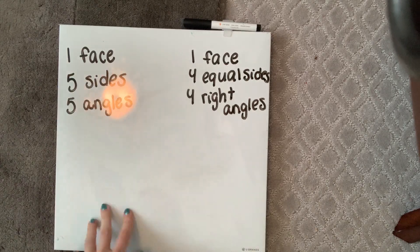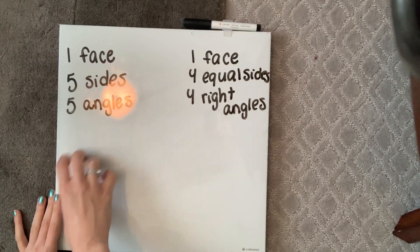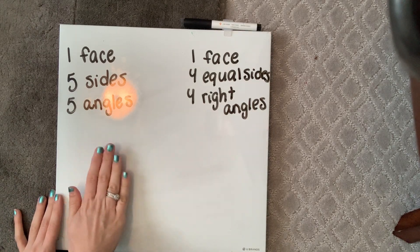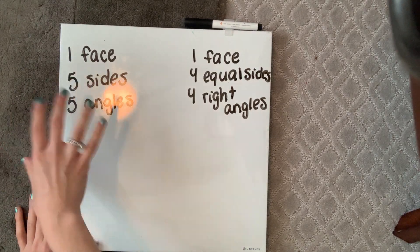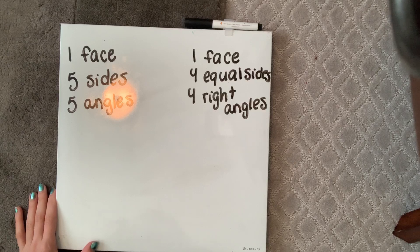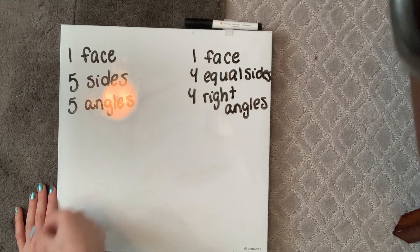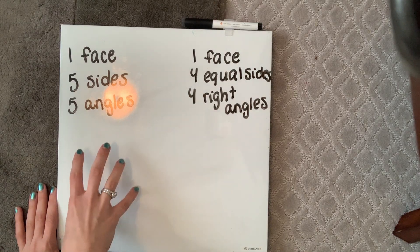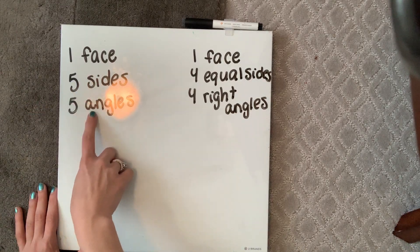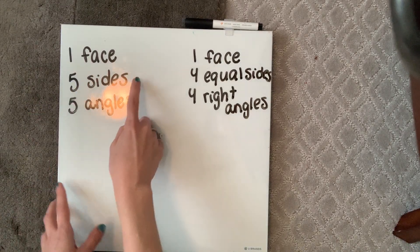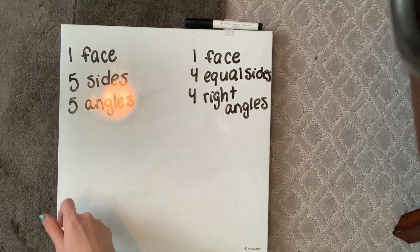It says it has one face. We know that the face of a shape is essentially what it looks like — it's that one flat side. So we know that if it only has one face, it's a 2D figure; we're not working with 3D shapes right now. Next clue: five sides. So I know it's going to have five lines to surround that one face. And finally, five angles — so my five sides are going to come to a point or an angle together. Let's go ahead and draw.